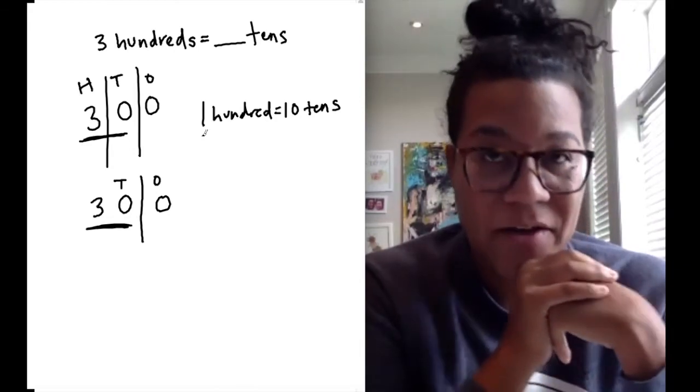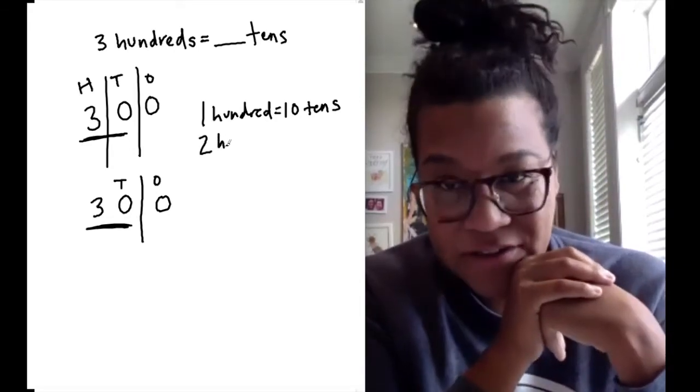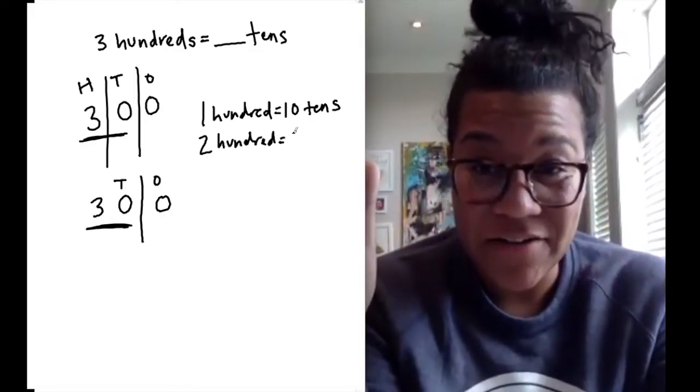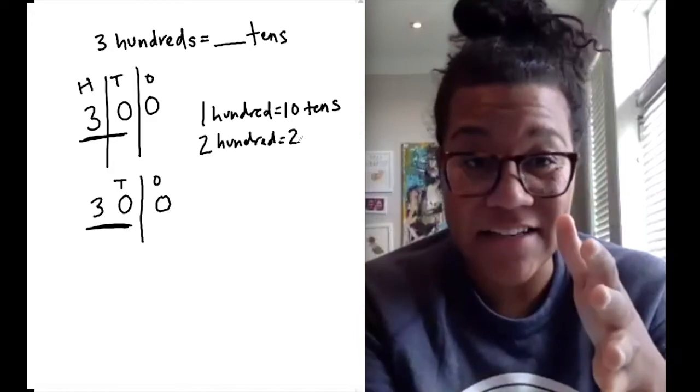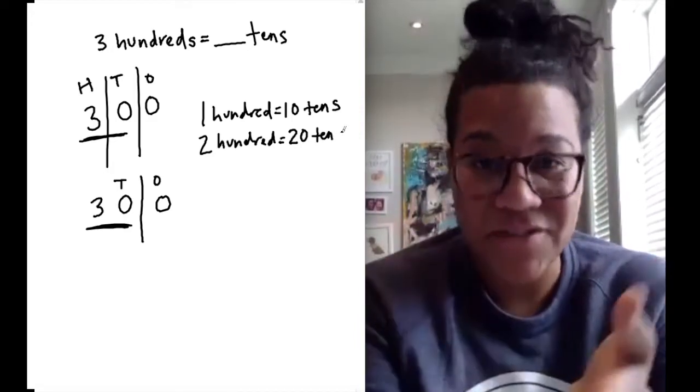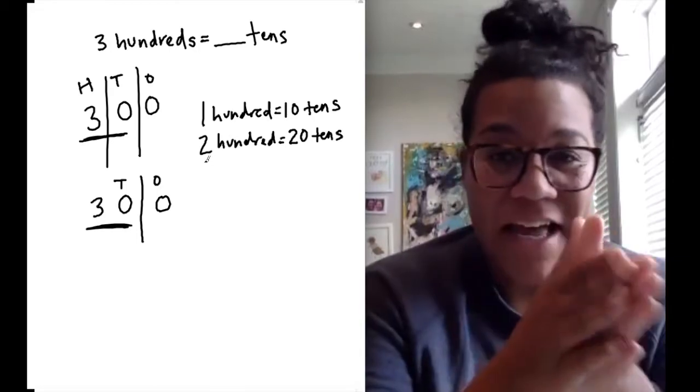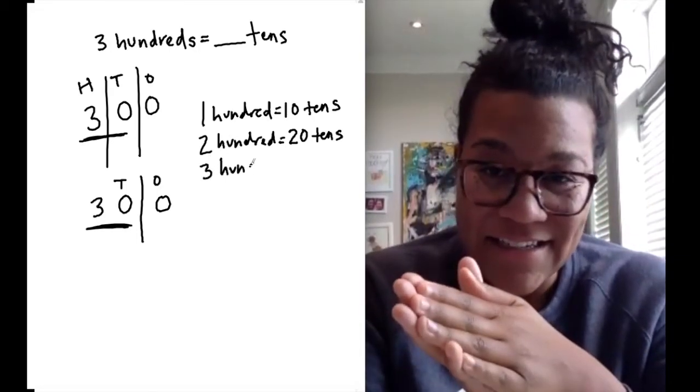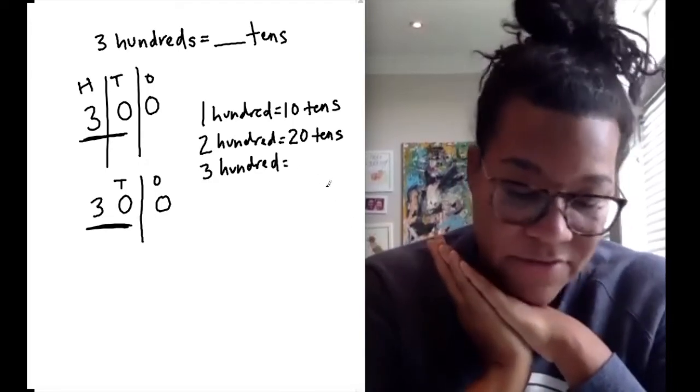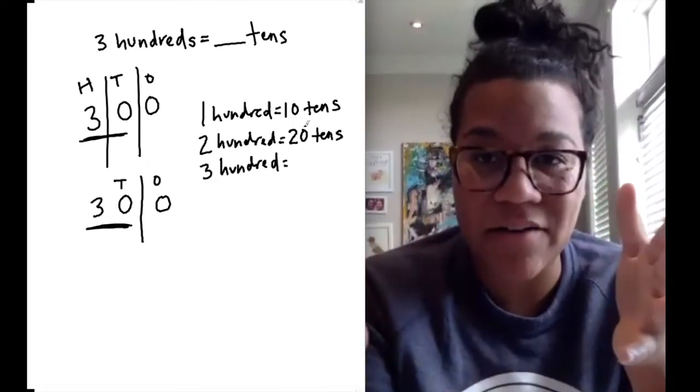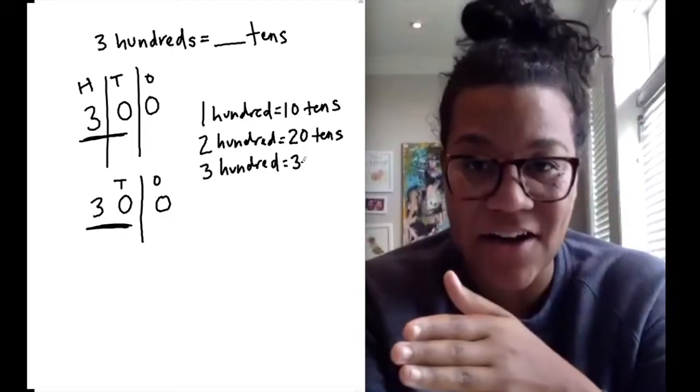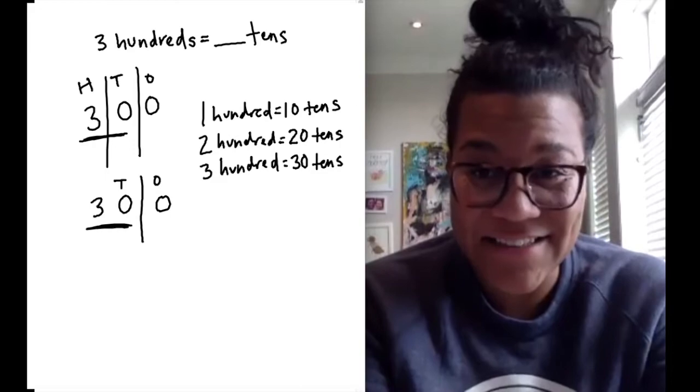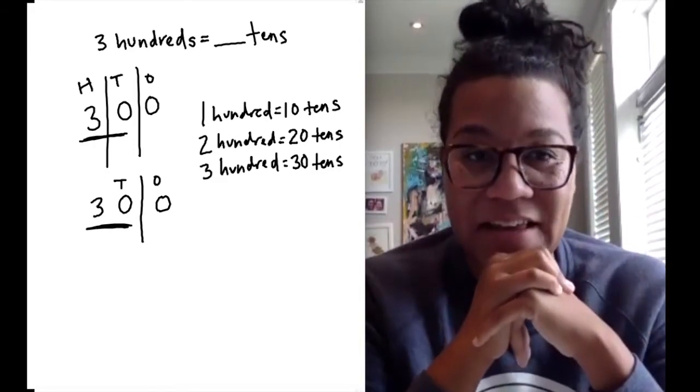Got it. And when I think about 200, there's 10 tens in 200 as well. Another 10. Another 10. Okay. So that's like 20 tens. That's 20 tens. And so 300 is next. And I see, oh, well, there's 10 tens in 300 as well. So there's 10, 10, 10, all the way up to 300. So there's 30 tens in 300. Excellent.